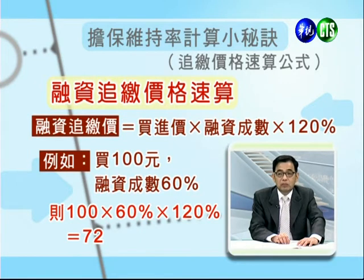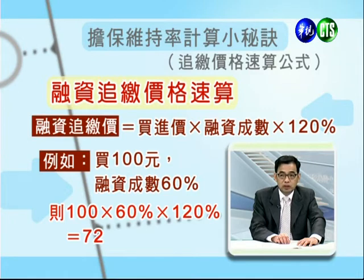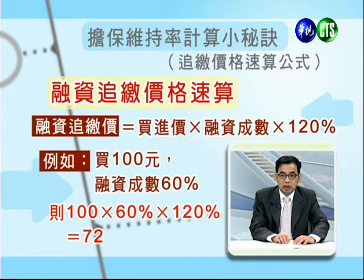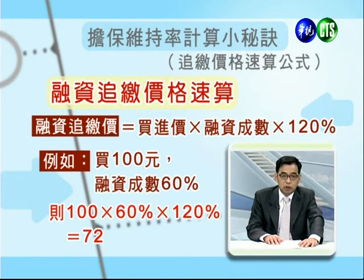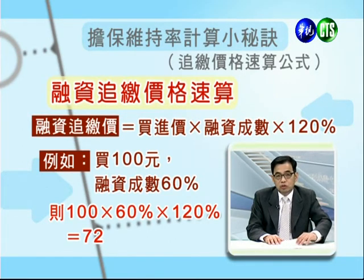融资追缴价格试算公式：买进价格乘以融资成数再乘以120%。例如买进一百元，融资成数60%，一百元乘以60%再乘以120%，算出来是七十二块。也就是说这档股票只要低于七十二块，就会收到证券公司的追缴令，这是非常可怕的事情。